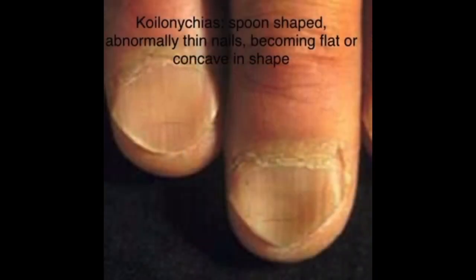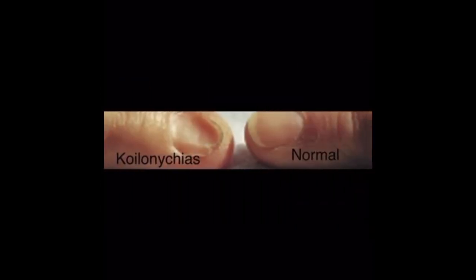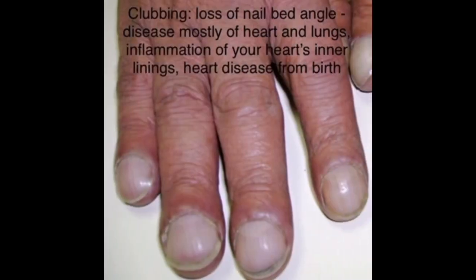This is another condition known as koilonychia. In koilonychia, the fingernails look spoon-shaped — they are abnormally thin and the nails usually become flat or concave in shape. As you can see in this picture, this shows the normal fingernail compared to the fingernail in koilonychia.